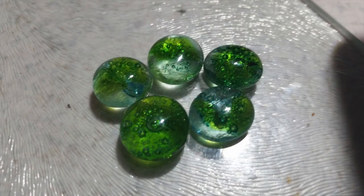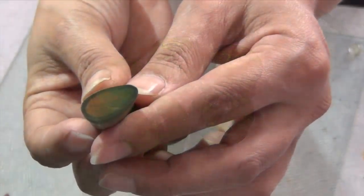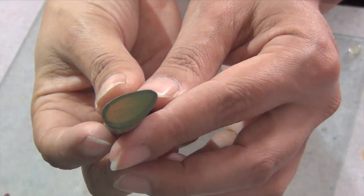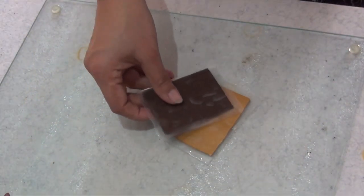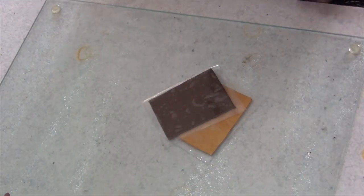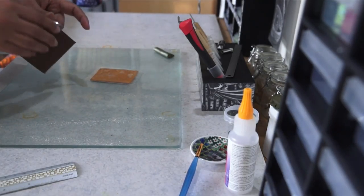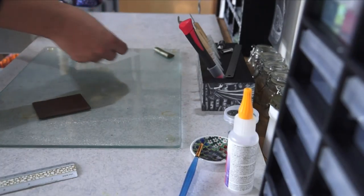Next I am making a leaf cane out of a Skinner blend bullseye cane. I found this particular technique in a book from Donna Kato. I already made a green leaf cane and now I am making a brown gold cane.